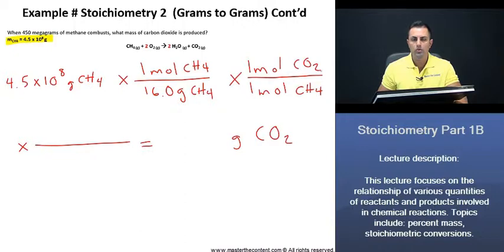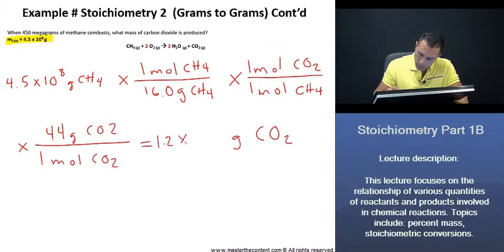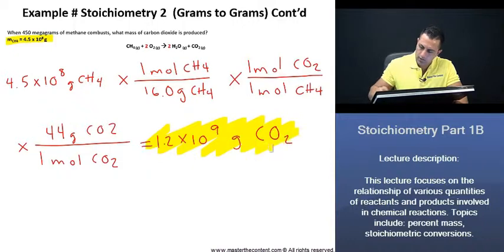Great. Now that we're in moles of carbon dioxide, what we actually need to do next is we now get into our grams. And in doing so, we know that per mole of carbon dioxide, we have 44 grams of carbon dioxide. And once we go ahead and we equate this, we get a value of 1.2 times 10 to the power of 9 grams of carbon dioxide. And there we are.